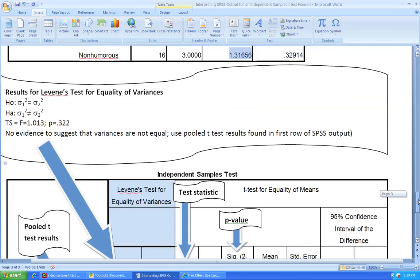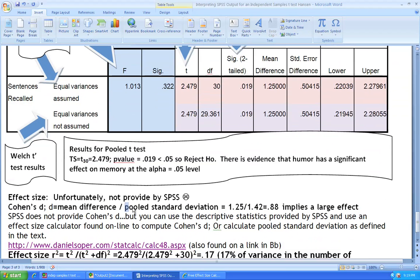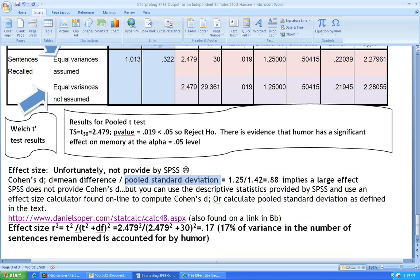You would also find that value if you used the pooled standard deviation computation which is found in our textbook. I do suggest that you use this online link because it's a little bit shorter.